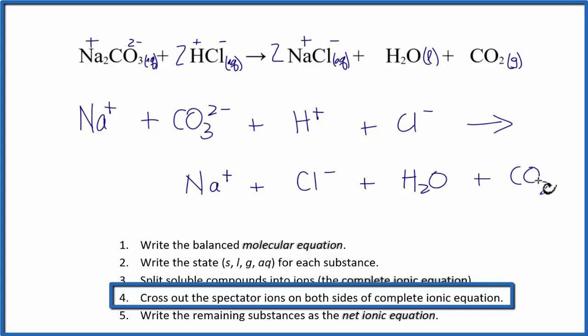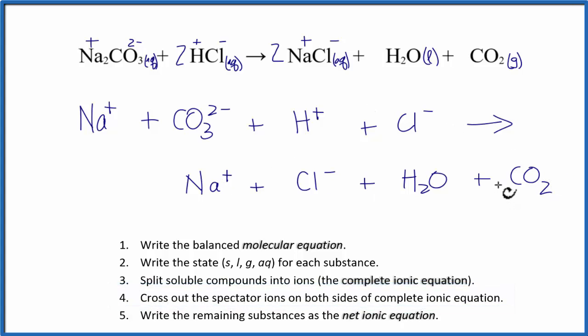We can cross out the spectator ions, the ions that appear on both sides of the equation, and that'll give us the net ionic. But before we do that, we need to take into account these subscripts and coefficients. The 2 here means we have 2 sodium ions, we only have 1 carbonate ion, and the coefficient of 2 applies to everything here. So we have 2 hydrogen ions, 2 chloride ions. On the product side we have 2 sodium, 2 chlorine, just the water and just the carbon dioxide.